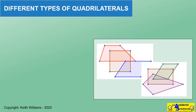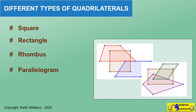We will be covering six different types of quadrilaterals: the square, the rectangle, the rhombus, the parallelogram, the kite, and the trapezium.